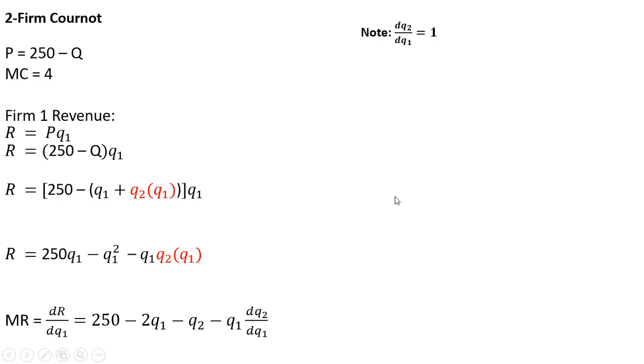Moving on, we're going to note that with cooperative conjectural variations, the sign of this derivative is just 1. So I'm just going to set this derivative equal to 1. Doing that, marginal revenue now looks like this. Simplifying a little bit more, and now setting marginal revenue equal to marginal cost. Marginal cost is 4.